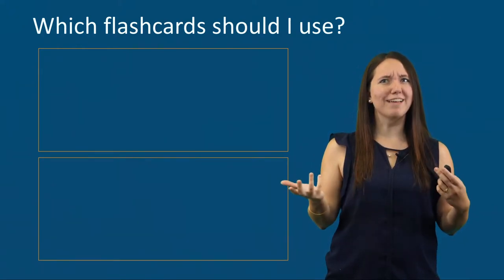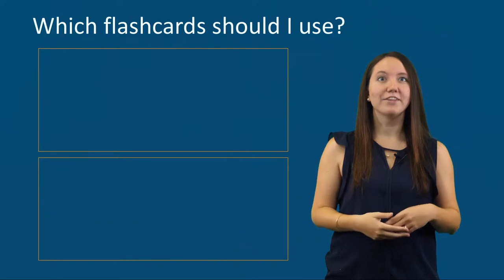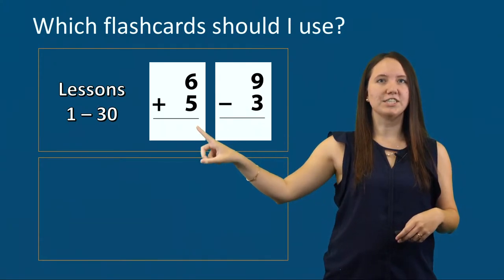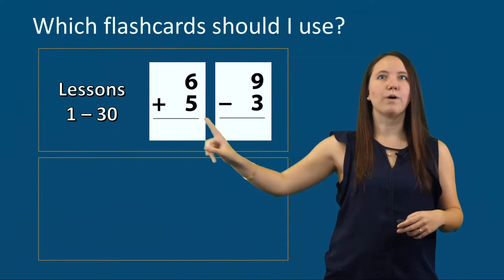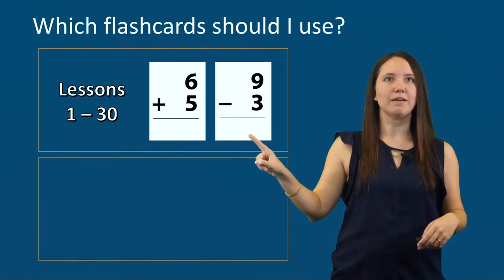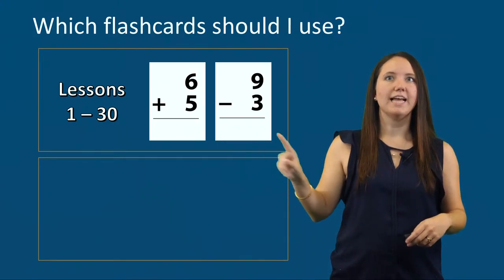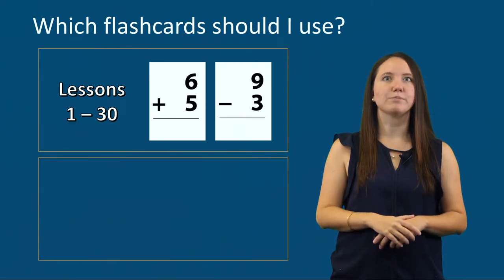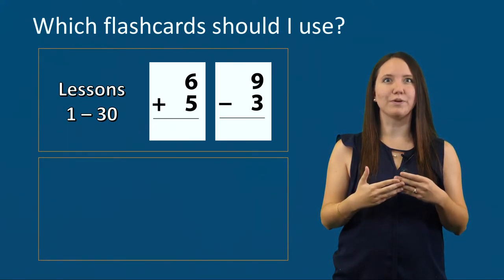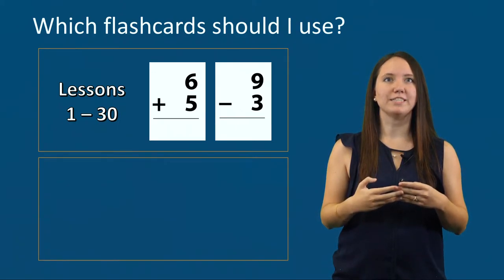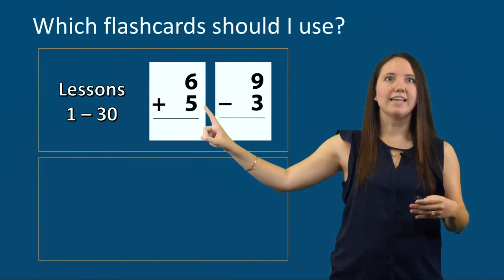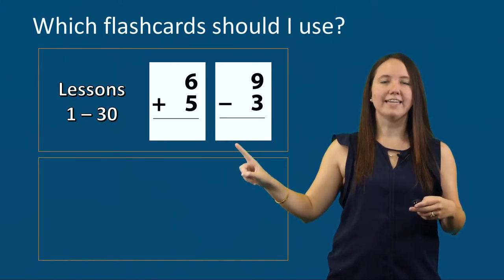You may be asking yourself, which flashcard should I use? For the small group intervention, I begin with the single-digit Addition and Subtraction flashcards for Lessons 1-30. The intervention combines Addition and Subtraction flashcards together throughout Lessons 1-30 to ensure students receive both during each lesson. For students who may struggle, you can start with Addition flashcards, and as they become more fluent, you can add in Subtraction flashcards.